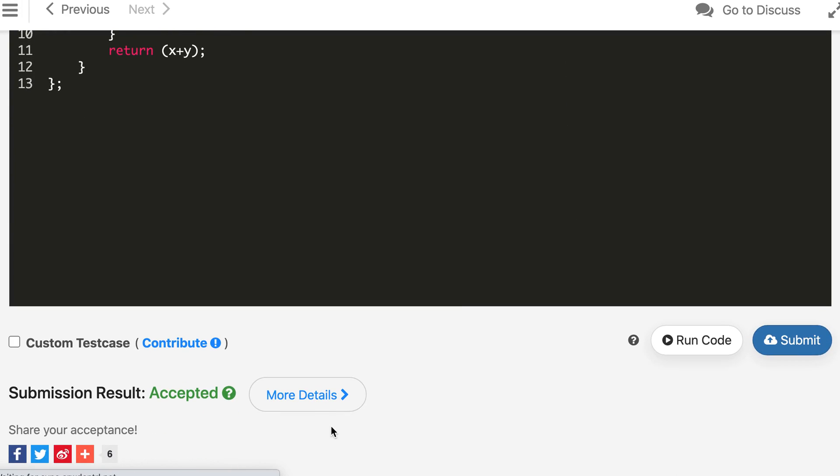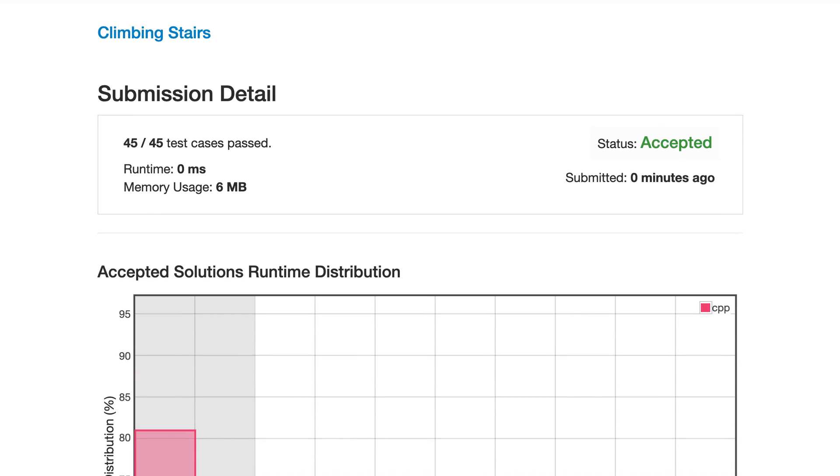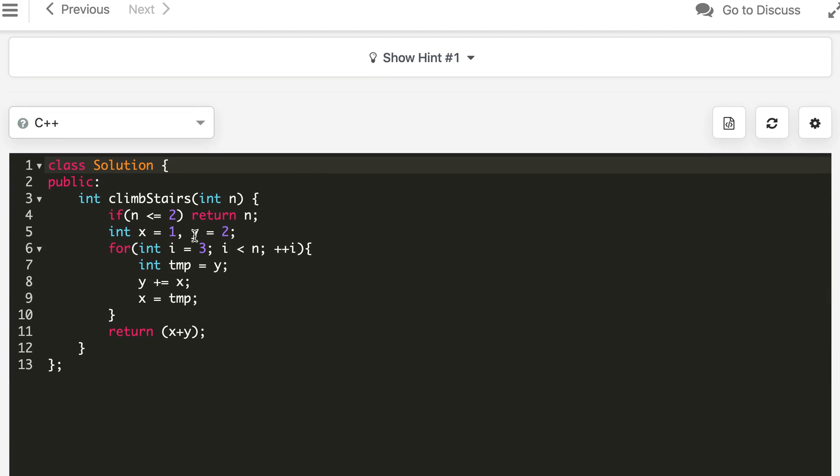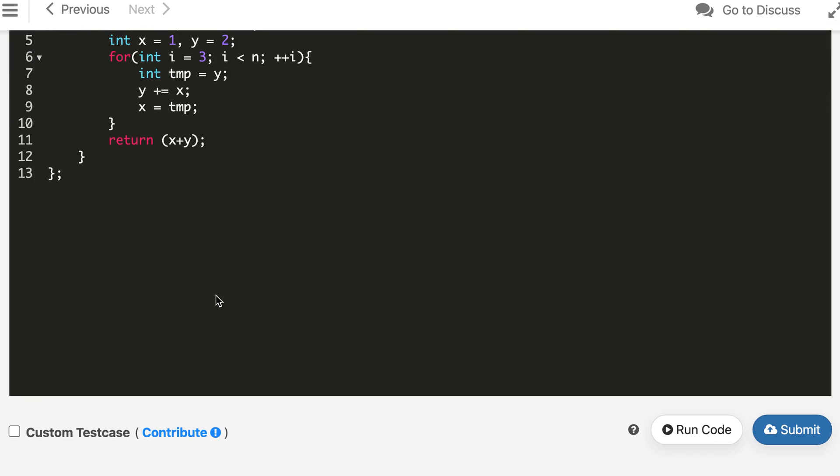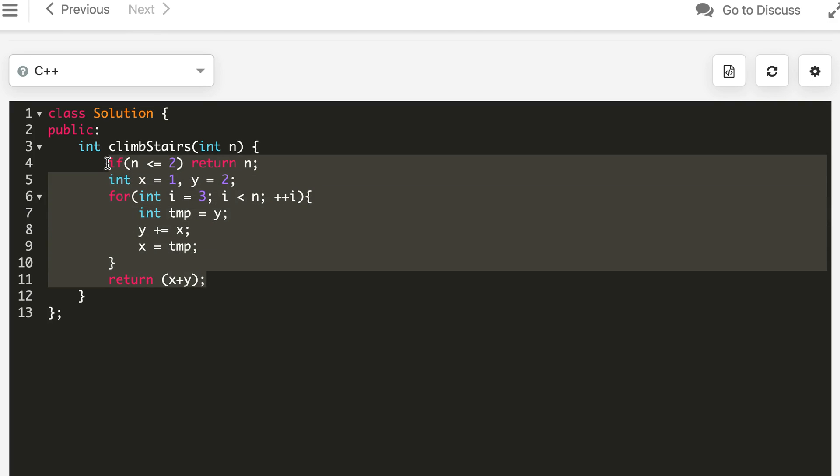And the solution is accepted. What will be the time complexity? It will be O of n since we are just iterating from 0 to n. So there are n iterations or n minus 2 iterations, so O of n. In space we are having a few variables so O of 1. So we can write the same logic in Java.